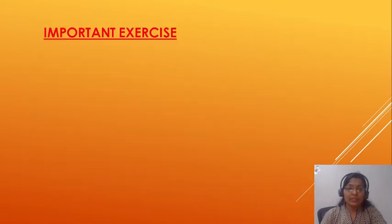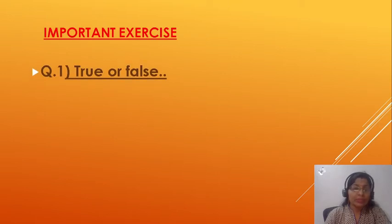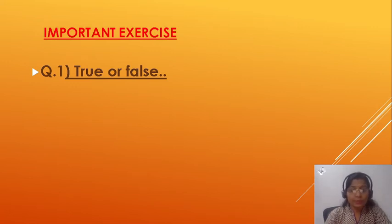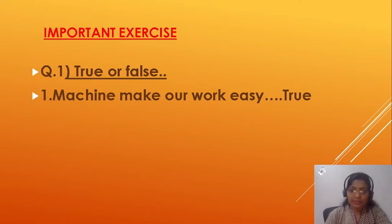Now some important exercises from chapter one. Question one: True or False. First statement — 'Machines make our work easy.' Is this true or false? Yes, this is true. Second statement — 'A computer runs on electricity.' Is this true or false? Yes, a computer always runs on electricity, so this is true.